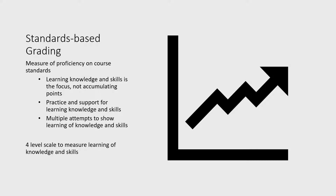Students are assessed with a standards-based system at the Bellevue Big Picture School. The focus is measuring proficiency on course standards, not assignments. Standards-based assessment is not based on accumulating points, but on a four-level scale of learning. Practice, support, and multiple attempts to show learning are strengths of standards-based grading.